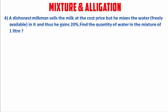Now the fourth question. A dishonest milkman sells milk at cost price but mixes freely available water in it and gains 20%. Find the quantity of water in a mixture of 1 liter. Water is freely available so its cost price is 0. Let the cost price of milk be Re 1. The selling price of the mixture equals the cost price of milk, which is Re 1.